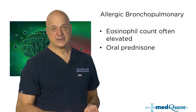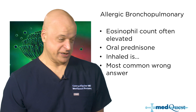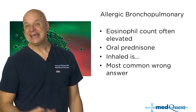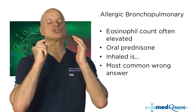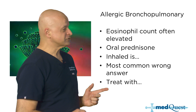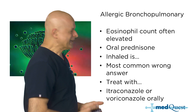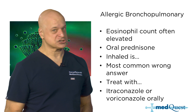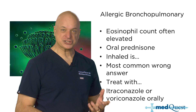The most common wrong answer is thinking inhaled steroids must work because you're delivering it directly into the lungs. But inhaled steroids are not potent enough to control this disease — you have to use systemic steroids. And because it's not disseminated and not life-threatening, it's not causing cavities or chewing through your lungs creating a halo sign. It's just irritating — not destroying permanently major tissue.